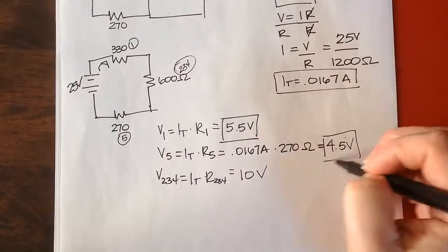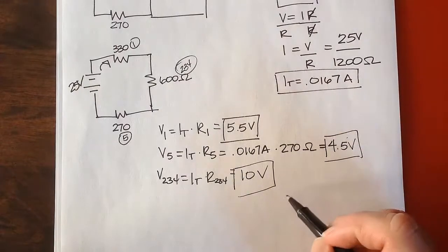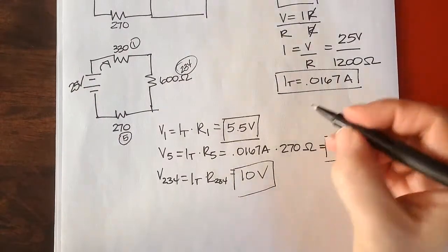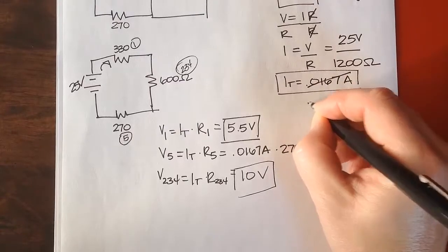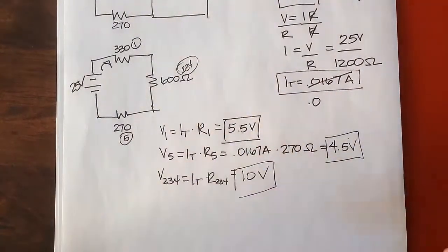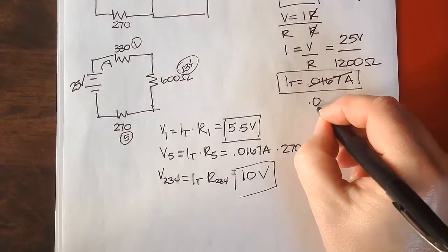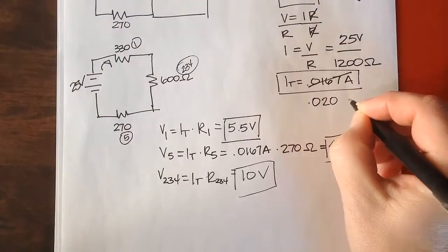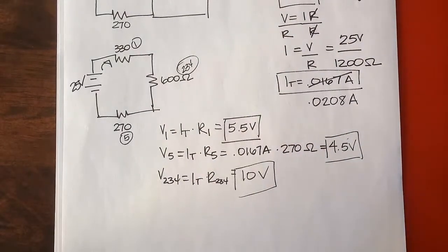So see, by checking my numbers, I had realized something was wrong there, because I got 20 volts. So this number should have been 0.0208. 20.8 milliamps.